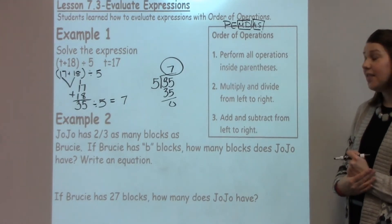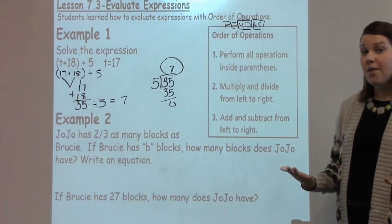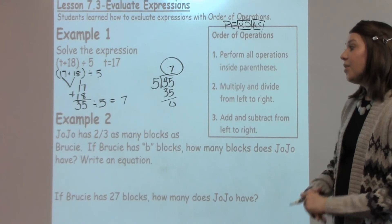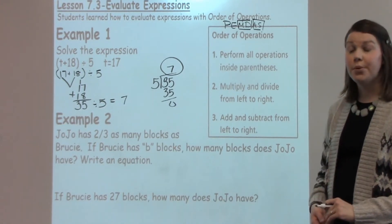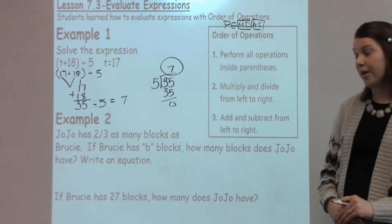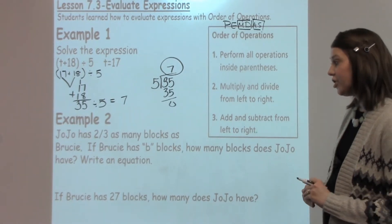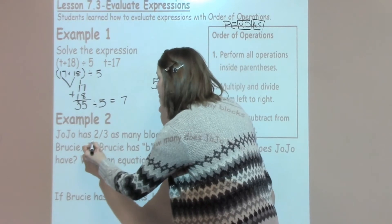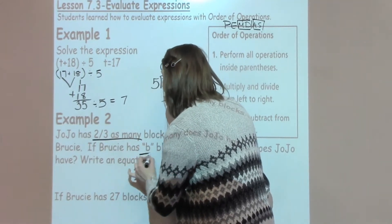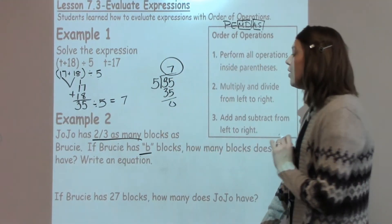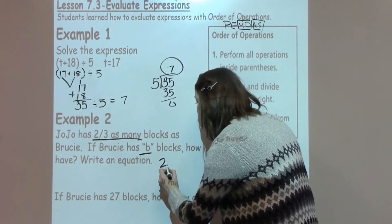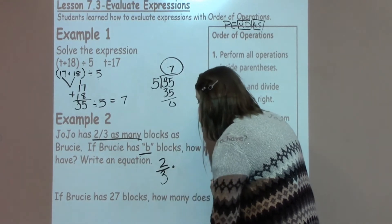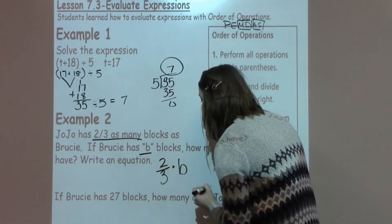Example 2 has students reading and thinking about ways to solve and write an equation. So it says Jojo has 2 thirds as many blocks as Brucey. If Brucey has B blocks, how many blocks does Jojo have? Write an equation. So I know Jojo has 2 thirds as many as Brucey, and Brucey has B. So I'm going to go ahead and write this equation right now, which is going to be 2 thirds times B.